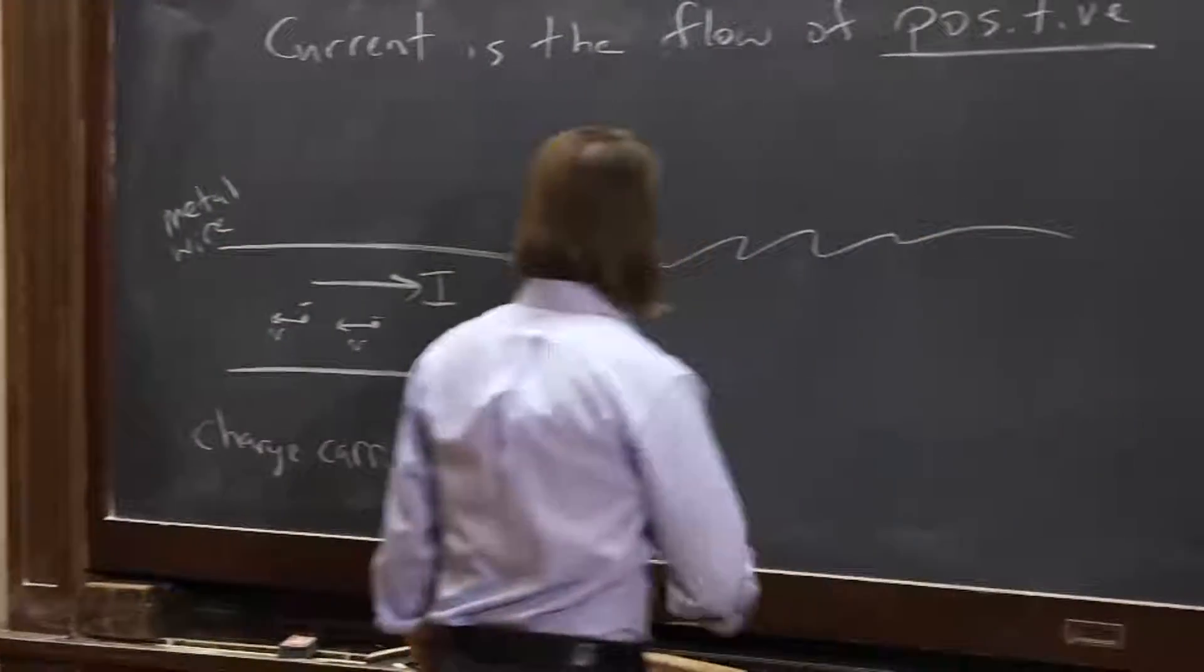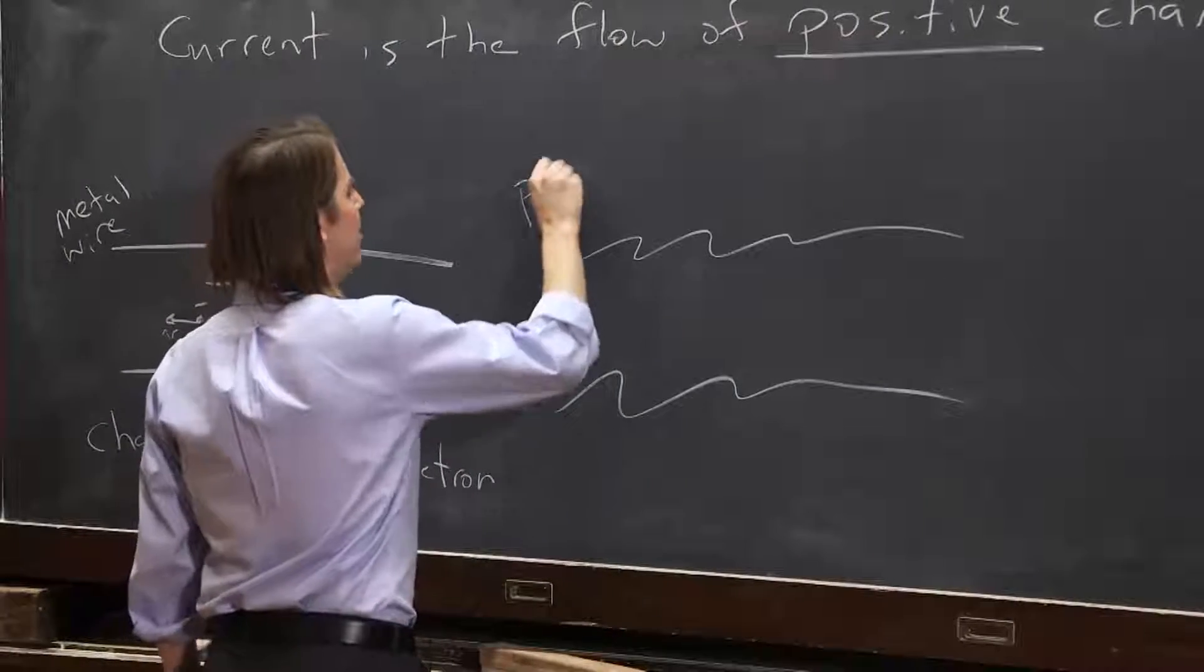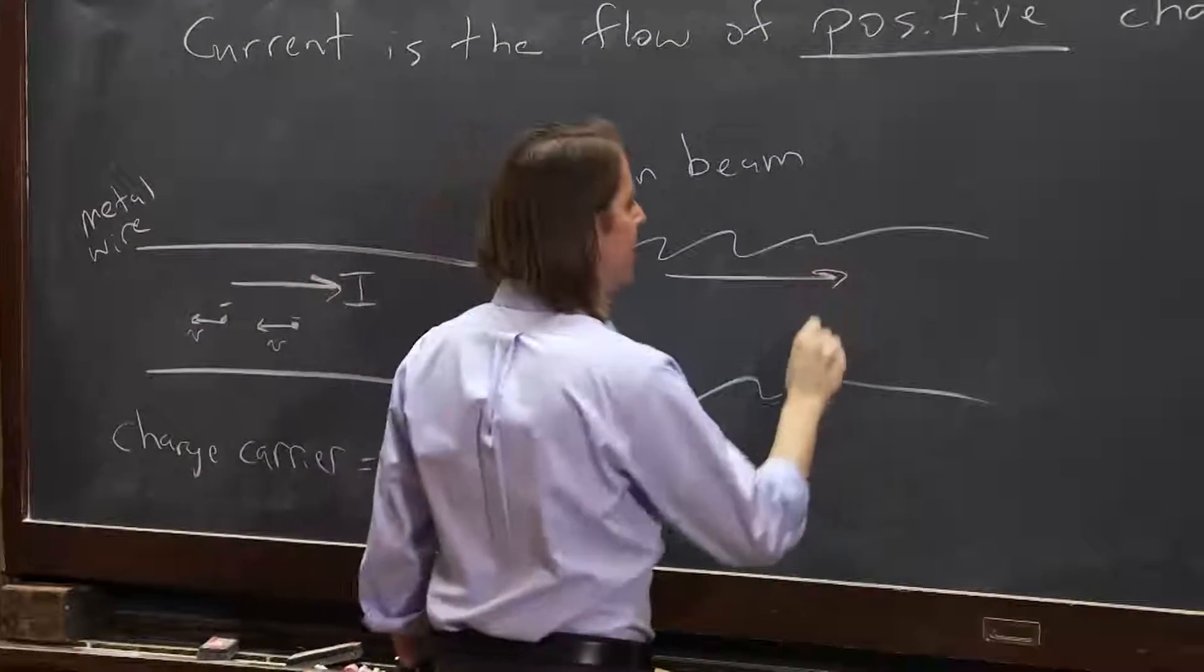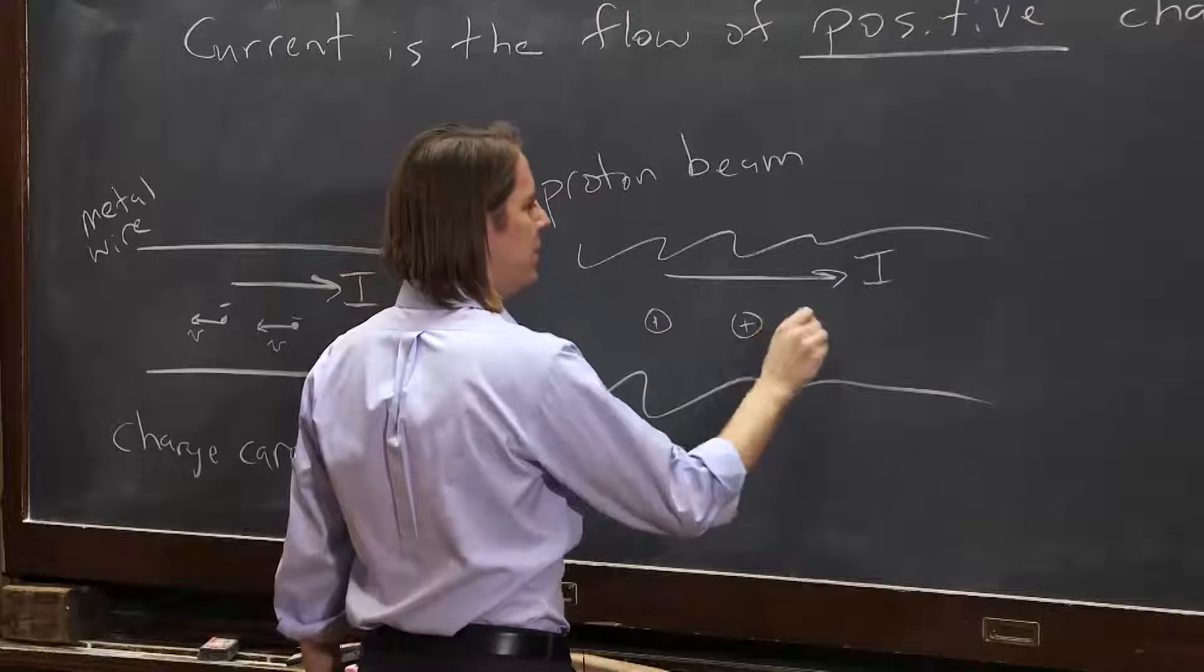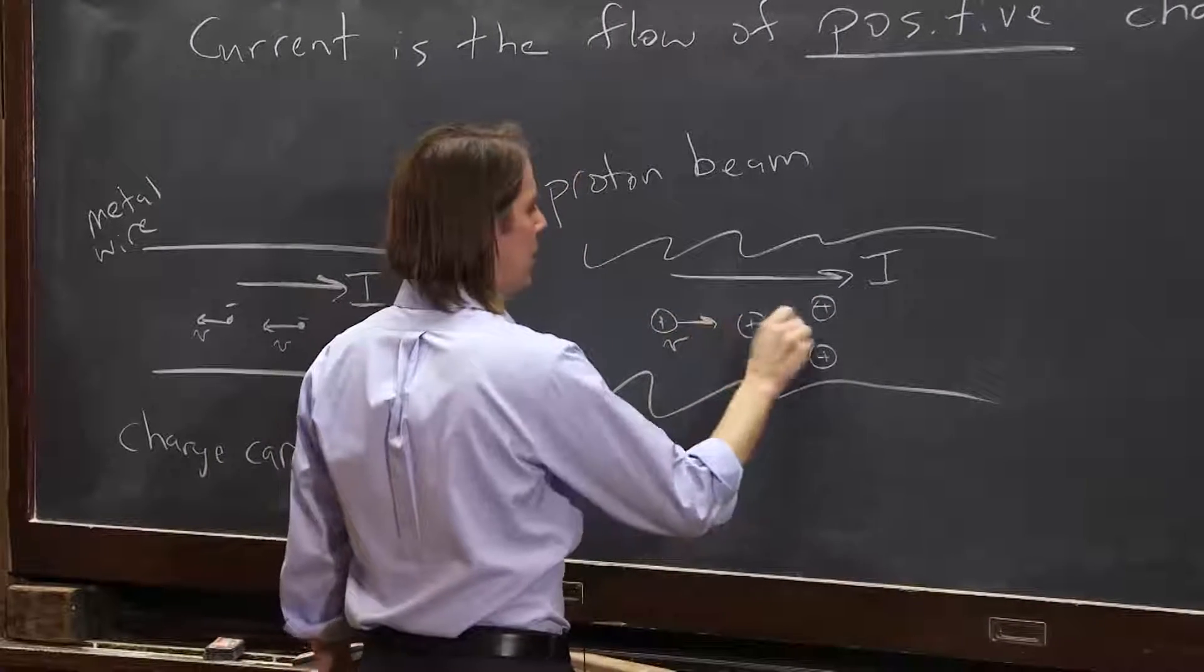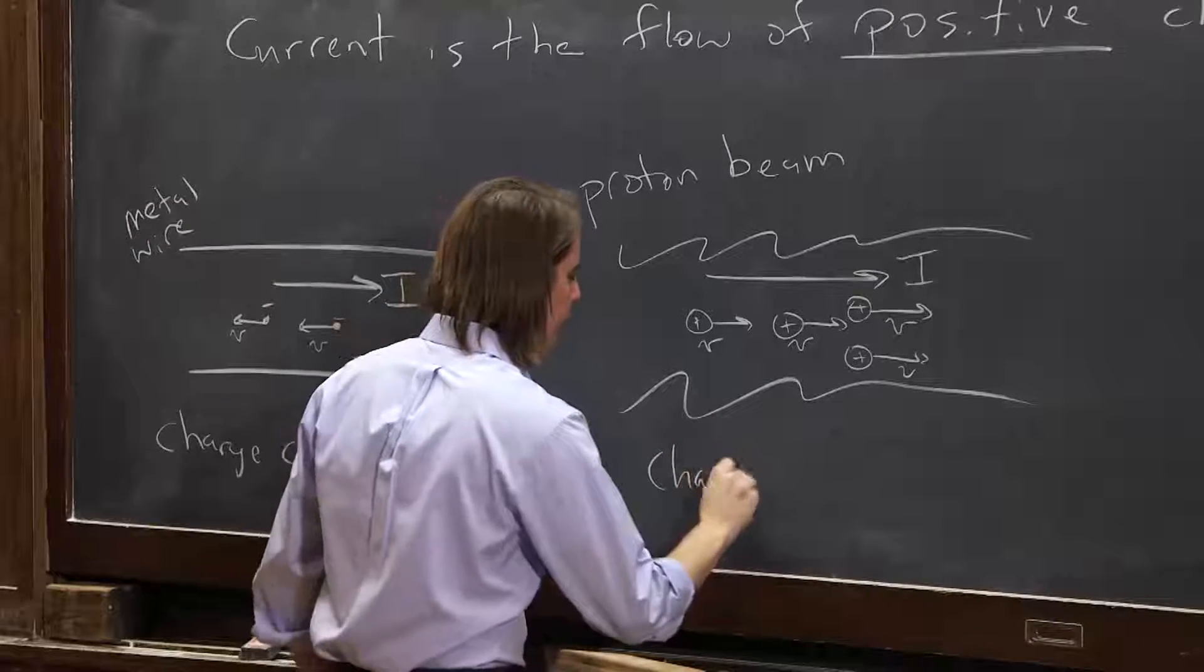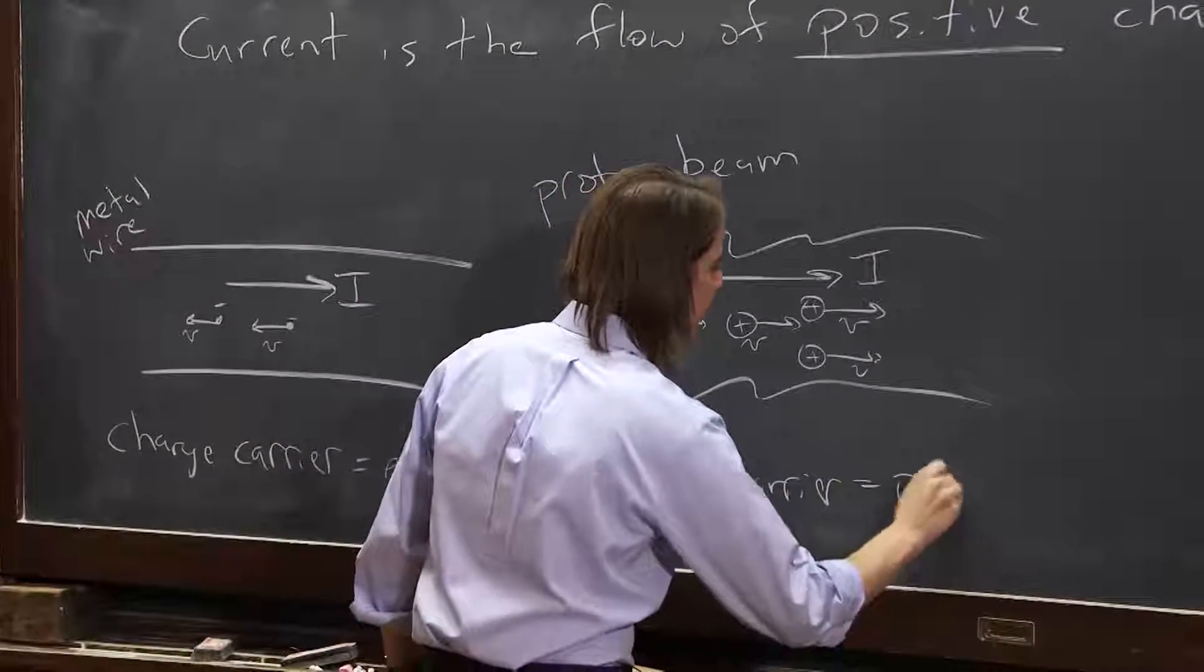But it really doesn't mean that's always the case. You can have other kinds of current. Here, you can have a proton beam. That's a current. It can even be measured as a current. In a proton beam, you could say, here's I. Well, what's the velocity? It's going to be the same direction as the current, because the charge carrier is a proton, and a proton is positive.